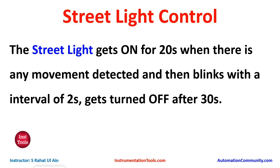After 20 seconds the street light will blink for 30 seconds with an interval of 2 seconds — that means it will be on for 2 seconds, off for 2 seconds, then again on for 2 seconds and again off for 2 seconds, and it will continue for 30 seconds. After 30 seconds the light will be off.